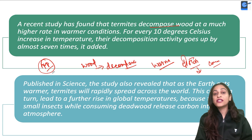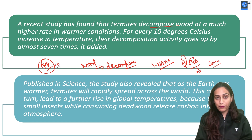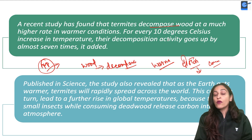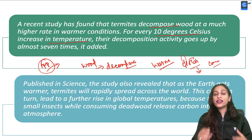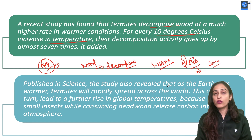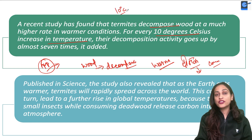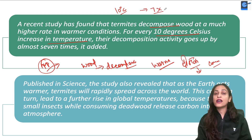This topic is related to environment and ecology. Now, for every 10 degree Celsius increase in temperature, the activity of termites will increase by 7 degrees worth. So a 10 degree Celsius temperature rise leads to a 7 degree increase in termite activity. This is a recent study.